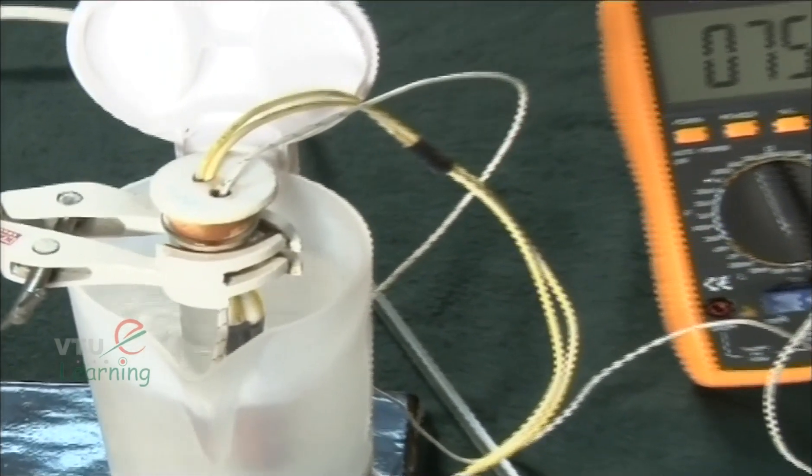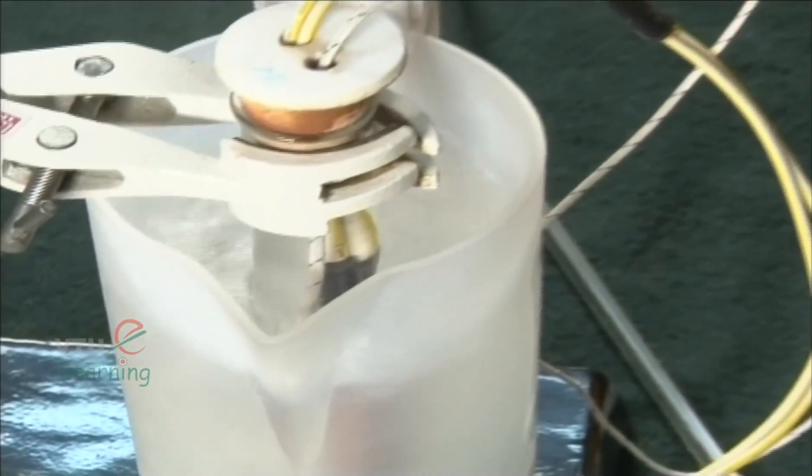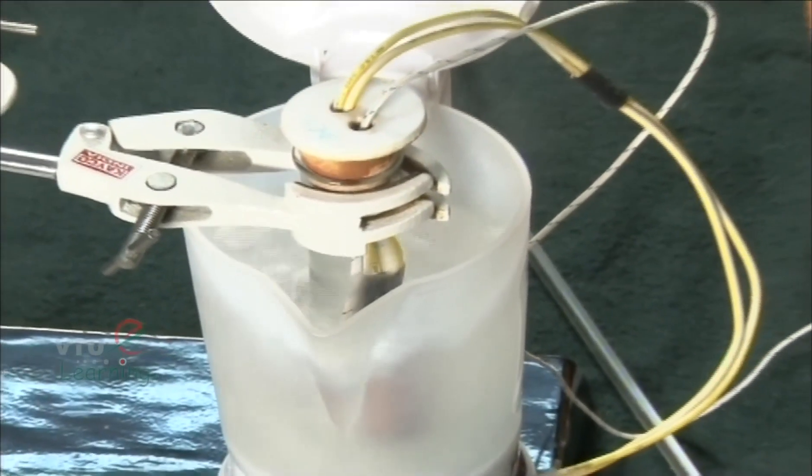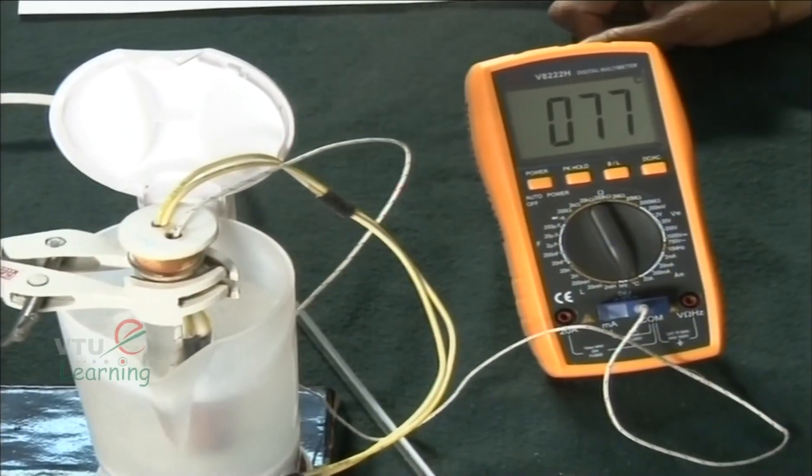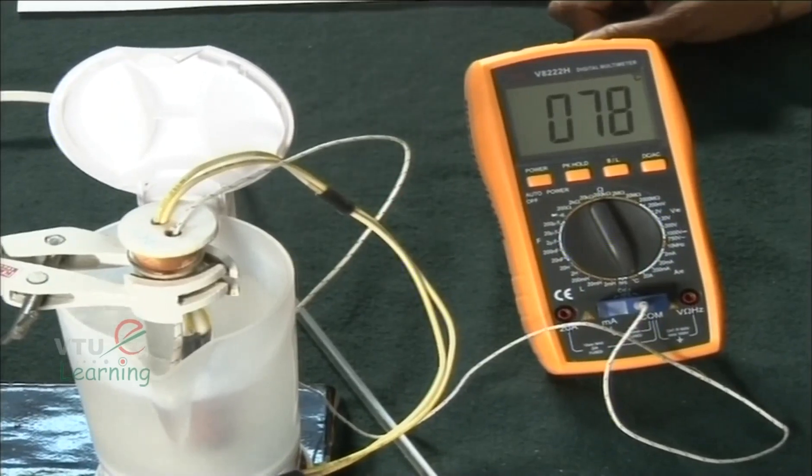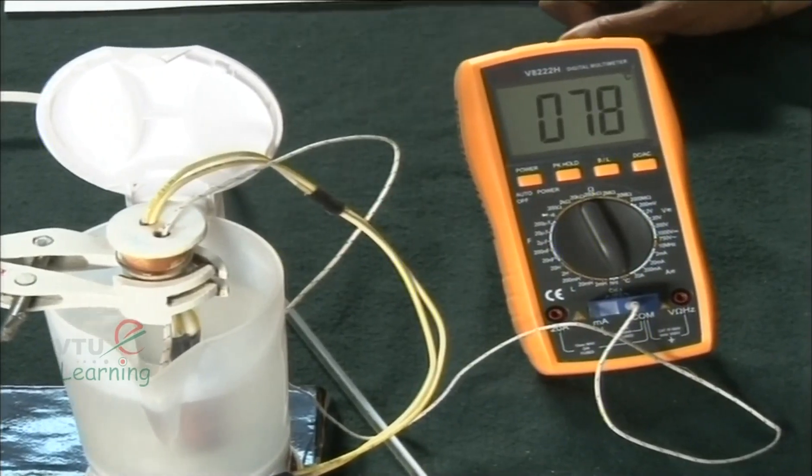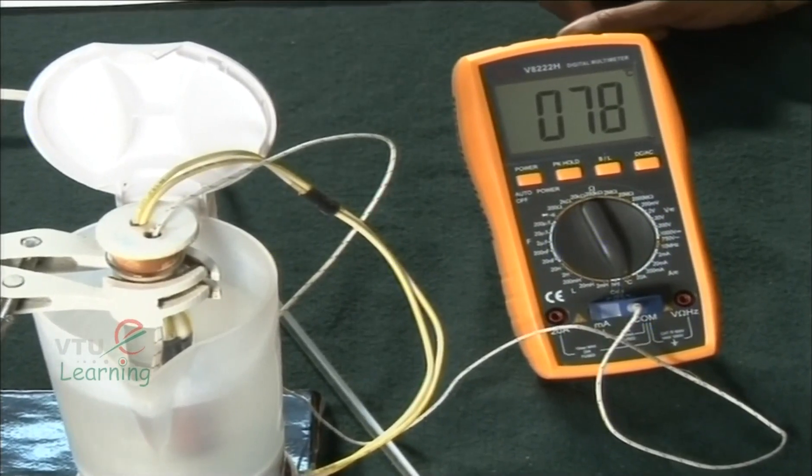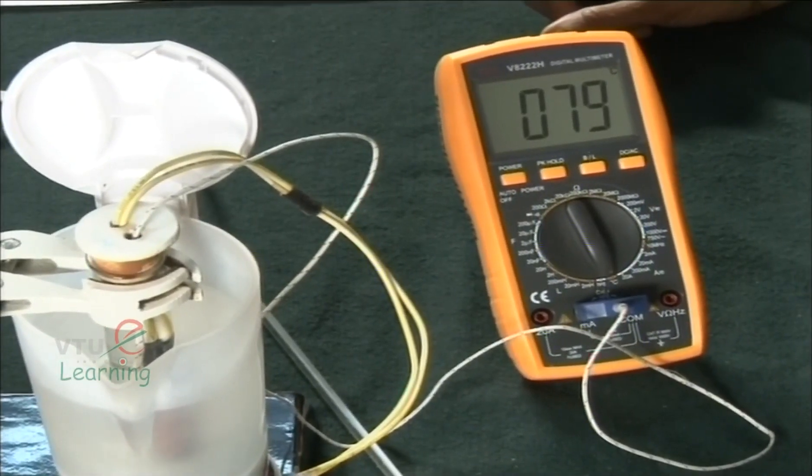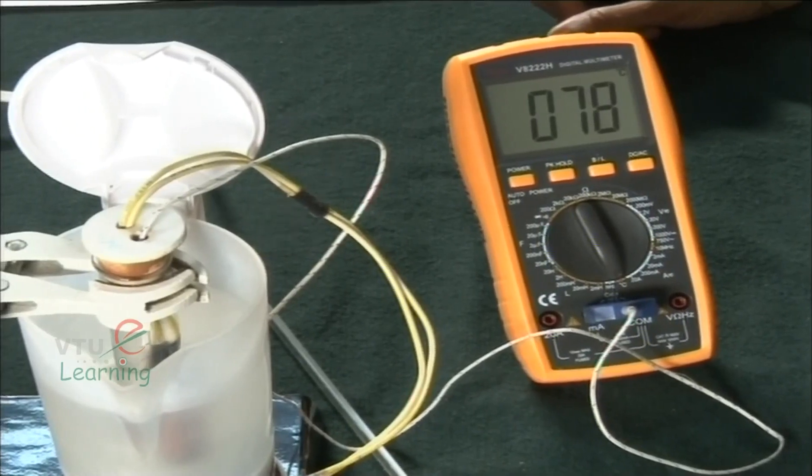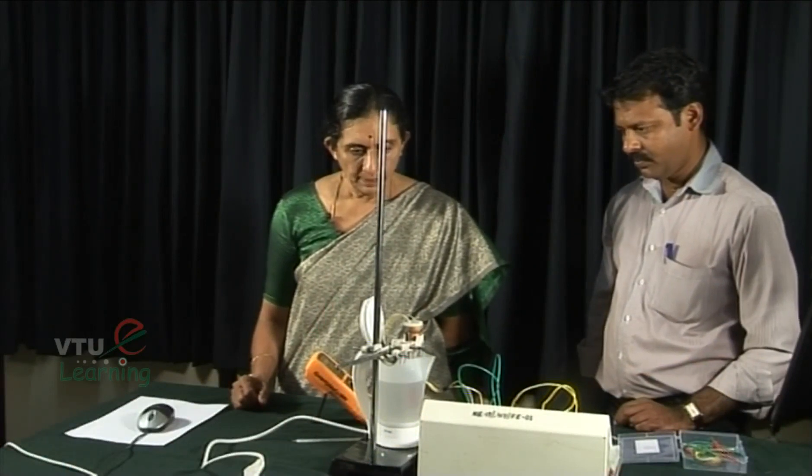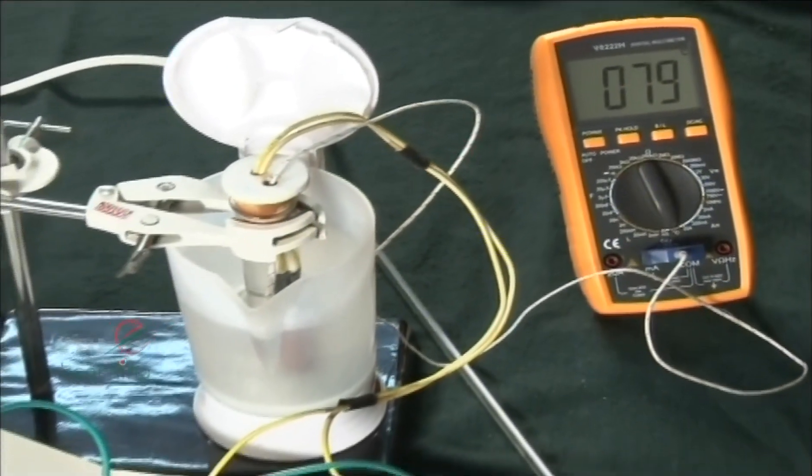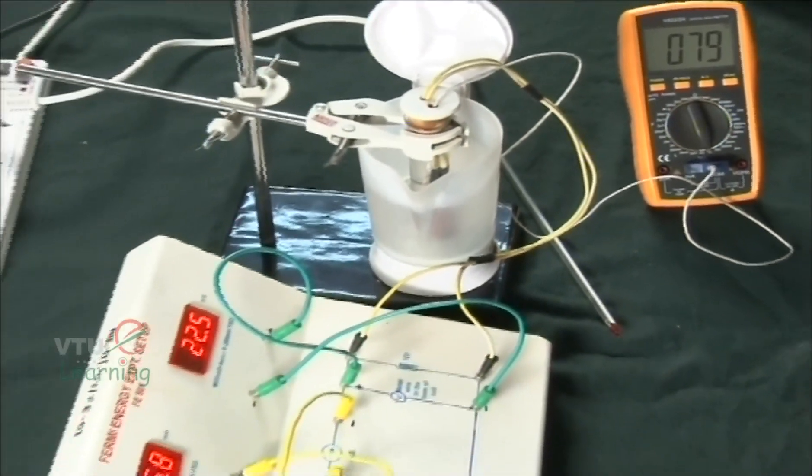You will see that the temperature is rising gradually and now it is almost touching 80 degrees. When it has touched something like 77 degrees, we have switched off so that with the heat already there available to the coil, it rises to the required temperature of 80 degrees centigrade. When once it has touched 80 degrees centigrade, we note down the milliammeter reading and the millivolt meter reading as indicated in the kit.